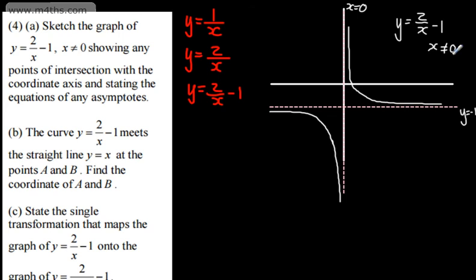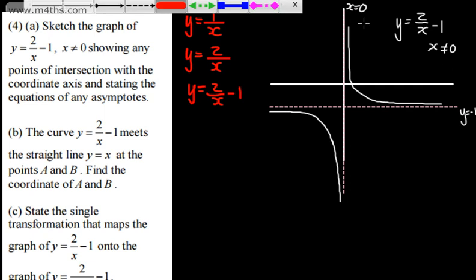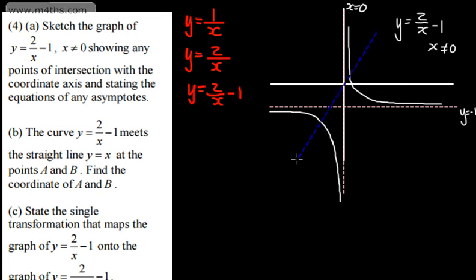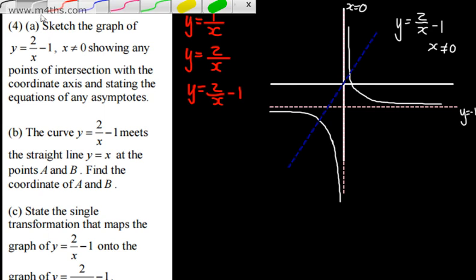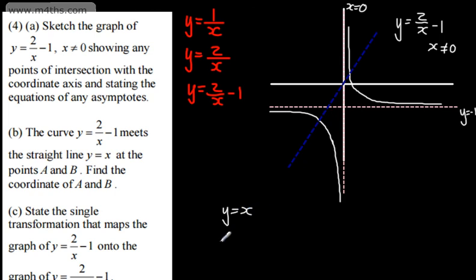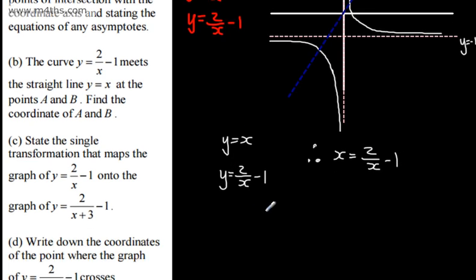In part B, the curve y = 2/x - 1 meets the straight line y = x at points A and B. We're asked to find the coordinates of A and B. Do remember that when you're stating the equations of asymptotes, you are clear with them. I'm going to put the line y = x on the graph. We can see that we're going to have two points of intersection. Setting y = x and y = 2/x - 1 as simultaneous equations, we can say that x = 2/x - 1.